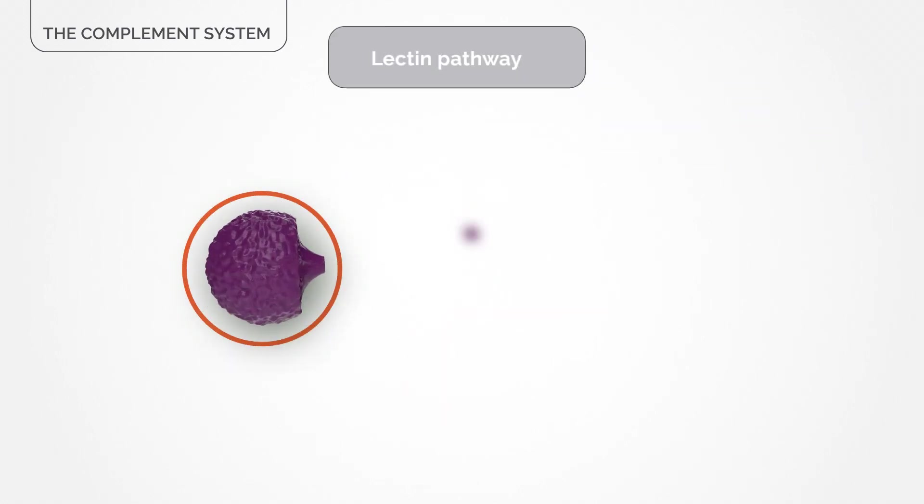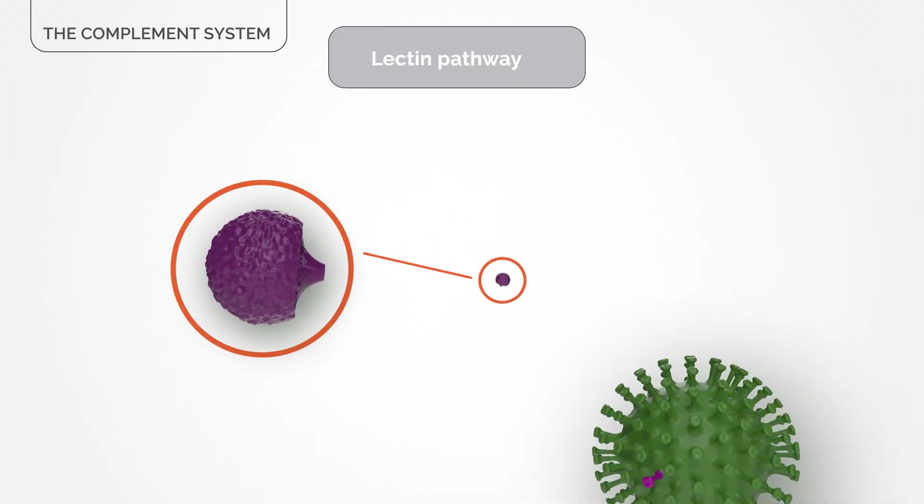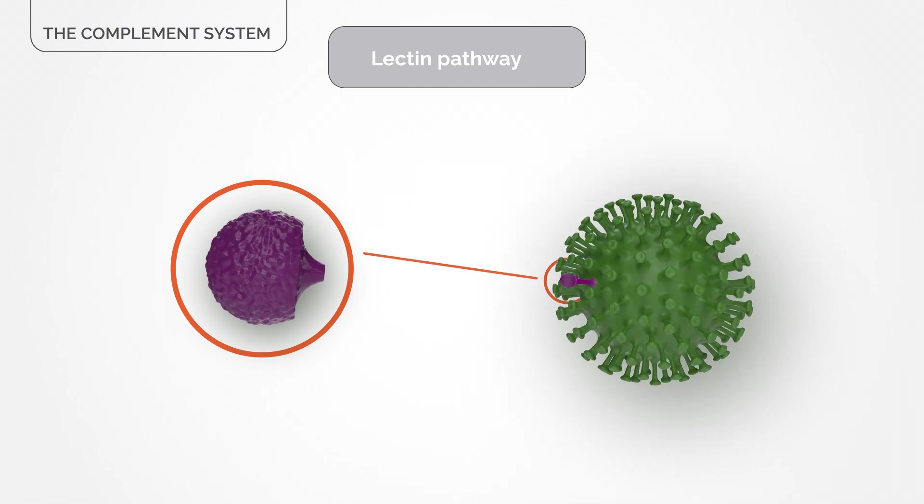The lectin pathway is activated by natural molecules in our body that recognize sugars at the surface of infectious organisms.